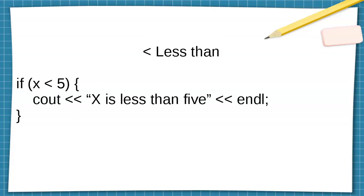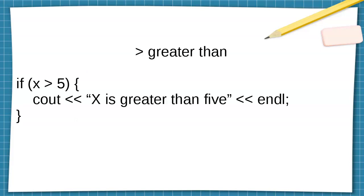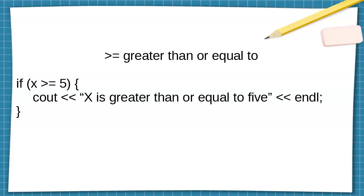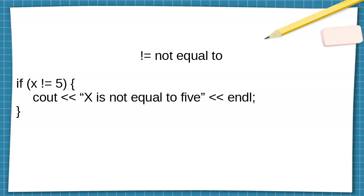Same kind of thing with less than: if x is less than five, you can just print out 'x less than five'. If x is greater than five, you can run that piece of code. If x is less than or equal to five — so that would be one, two, three, four, five and zero, anything less than that — then it would print 'less than or equal to five'. Here we have greater than or equal to five, and now not equal to five.